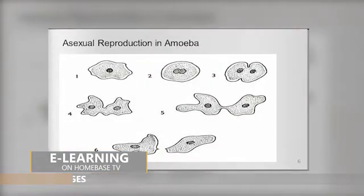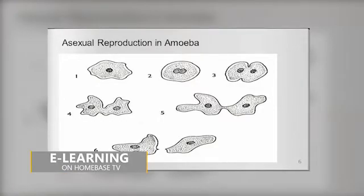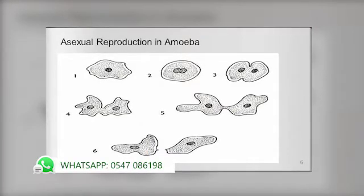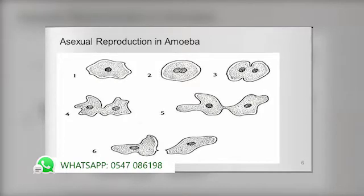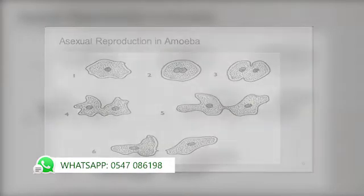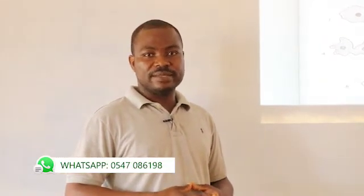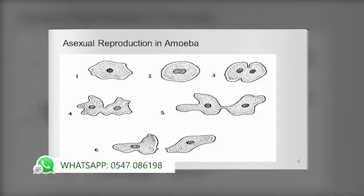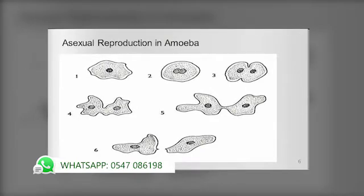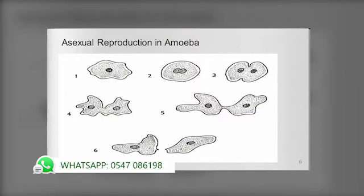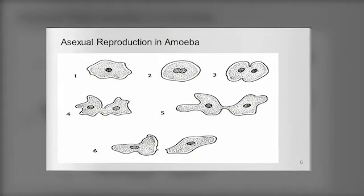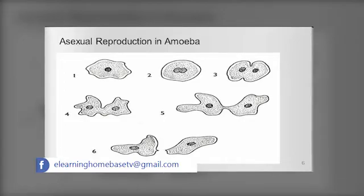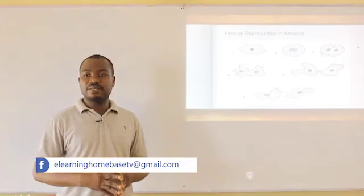Let's look at an example of asexual reproduction occurring in the organism amoeba. The parent amoeba cell undergoes changes in order to divide into two different amoeba cells. From the first stage to the fifth stage, you see the division almost about to occur. At the last stage — stage six — the parent amoeba cell has divided into two, forming two different amoeba cells from the same parent.